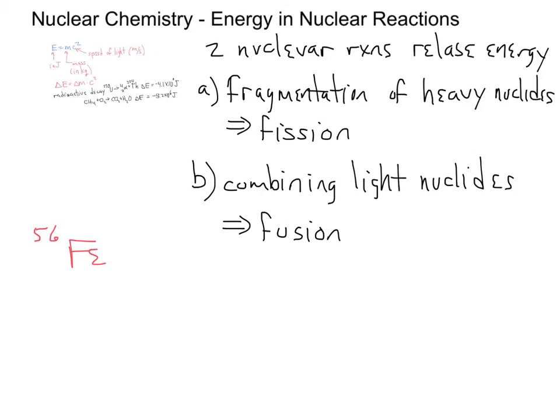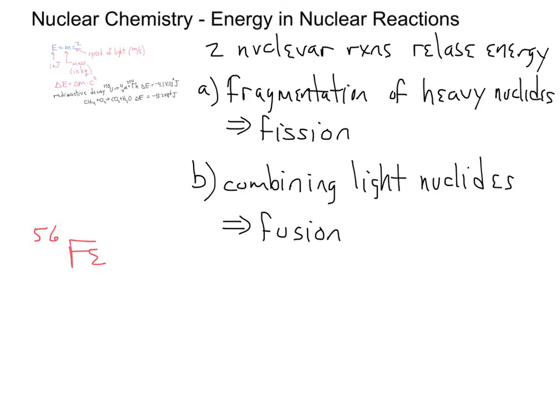We can look at the energy changes in a nuclear reaction by looking at the change in mass for a nuclear reaction. And this is the last problem that we have today. In this one, I wanted to calculate the energy change associated with the beta decay of cobalt-60.